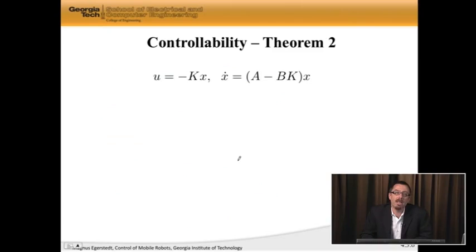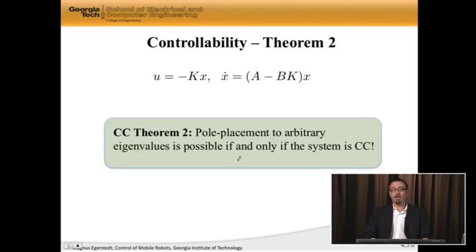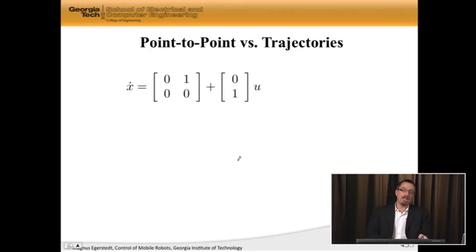It seems like we're ready for theorem number 2. So if I have u is negative kx, x dot then become a minus b kx. This is the closed loop dynamics. Then controllability theorem number 2 says that pole placement to arbitrary eigenvalues is possible if and only if the system is completely controllable. So what this tells me is that we need to check controllability. If we don't have complete controllability, chances are we're not going to be able to control it. So this is the obstruction to pole placement.